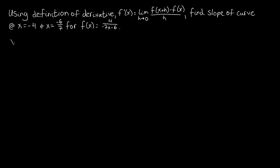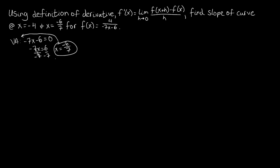We know that vertical asymptotes occur when the denominator equals zero. So let's see what x value we have to plug in to make this denominator zero. We get negative 7x equals 6, or, when we divide by negative 7, x equals negative 6 over 7 makes our denominator zero.